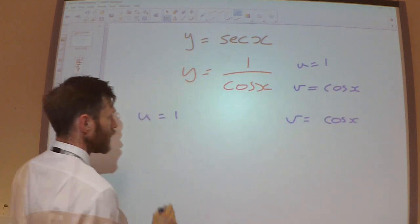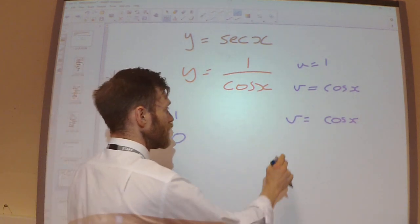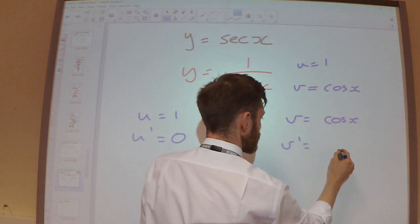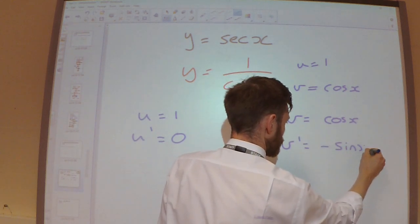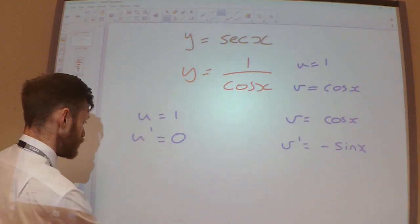So u dashed, when I differentiate 1, I get 0. When I differentiate cos, I get minus sine.